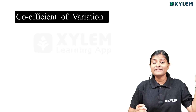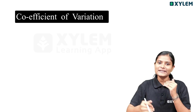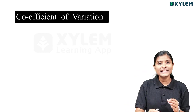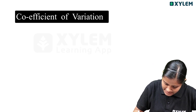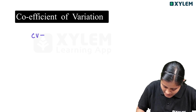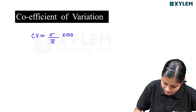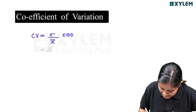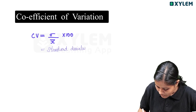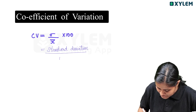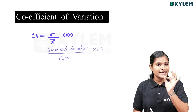Coefficient of variation. You have to take a look at the questions that are repeated in this concept. What do we call coefficient of variation? CV is equal to standard deviation divided by mean into 100. This is our coefficient of variation equation.